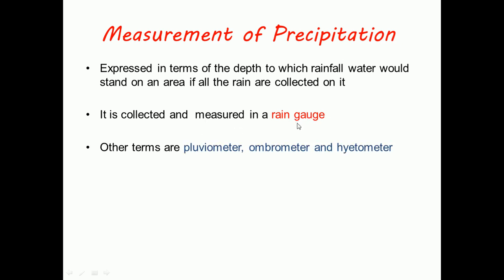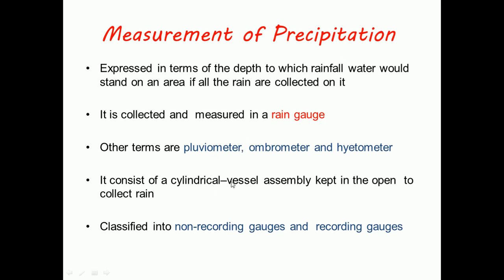It is collected and measured in a rain gauge. Other terms for rain gauge are fluviometer, ombrometer, and hydrometer. It consists of a cylindrical vessel assembly kept in the open to collect rain and is classified into non-recording gauges and recording gauges.